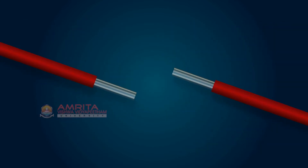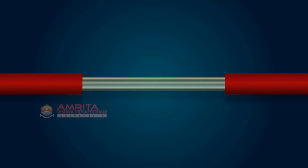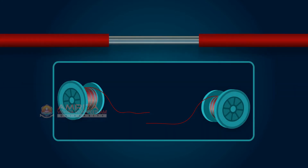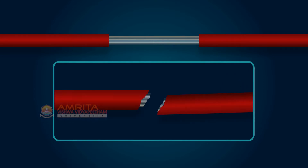Fiber optic splicing is the process of joining two fibers. Fiber optic cables need to be spliced for the following reasons: to get a link of particular length by joining many fibers, and for splicing fiber in case of breakage of cable.